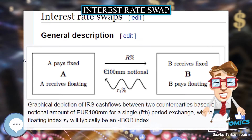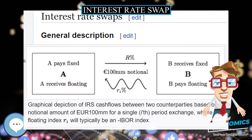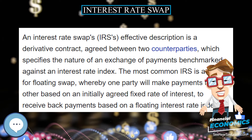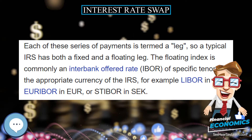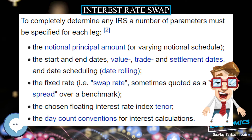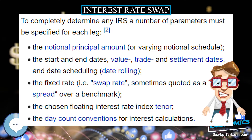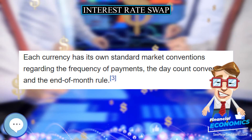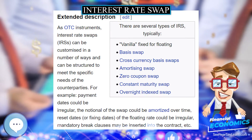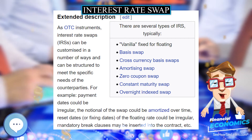It has associations with forward rate agreements (FRAs) and with zero coupon swaps (ZCSs). In its December 2014 statistics release, the Bank for International Settlements reported that interest rate swaps were the largest component of the global OTC derivative market, representing 60%, with the notional amount outstanding in OTC interest rate swaps of $381 trillion and the gross market value of $14 trillion.